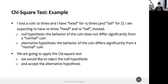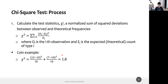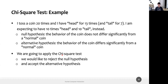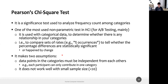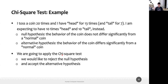A quick example about tossing a coin: I toss a coin 20 times and I have heads as the first category — this simple example will illustrate the chi-square test, even though it is not a user interface example.